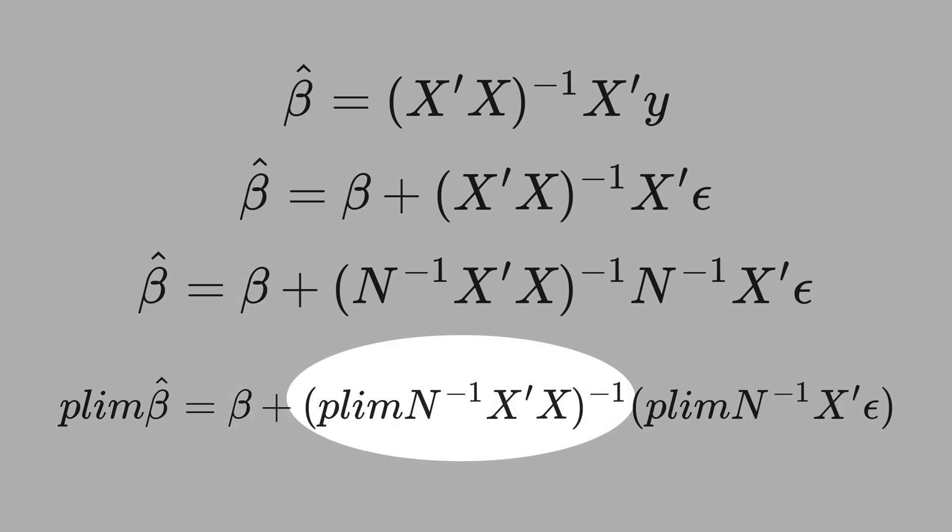This first probability limit we are going to ignore because this will converge to the matrix covariance of x. Nothing changes.